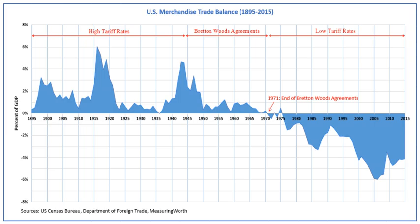The developed countries also agreed that the liberal international economic system required governmental intervention. In the aftermath of the Great Depression, public management of the economy had emerged as a primary activity of governments in the developed states. Employment, stability, and growth were now important subjects of public policy. The role of government in the national economy had become associated with the assumption by the state of the responsibility for assuring its citizens a degree of economic well-being. The system of economic protection for at-risk citizens — sometimes called the welfare state — grew out of the Great Depression, and out of the theoretical contributions of the Keynesian school of economics, which asserted the need for governmental intervention to counter market imperfections.